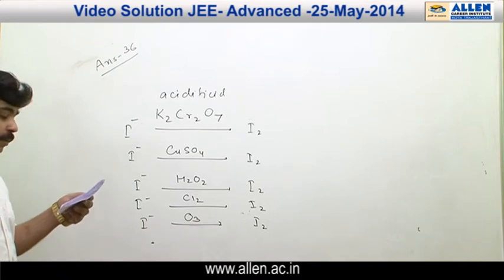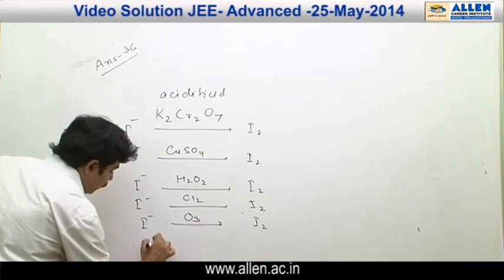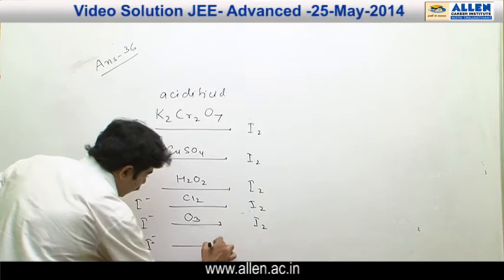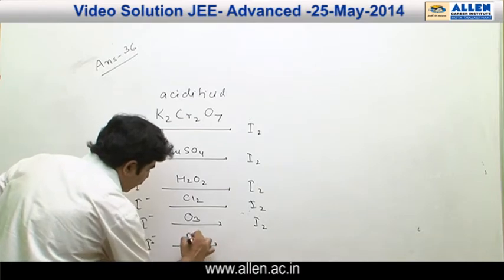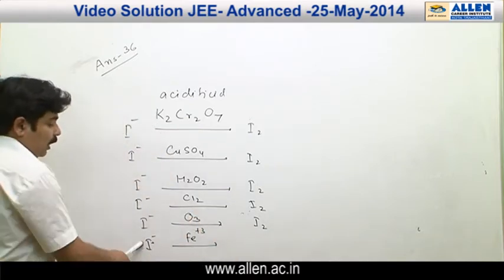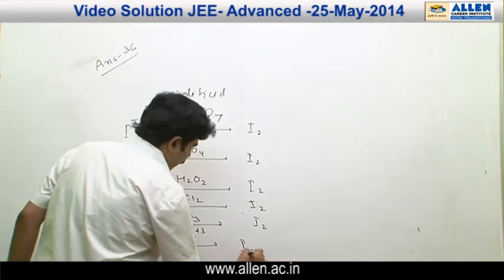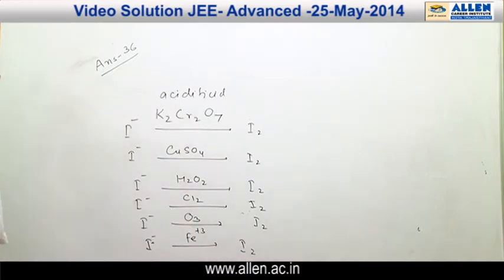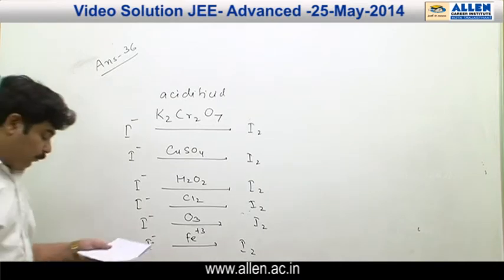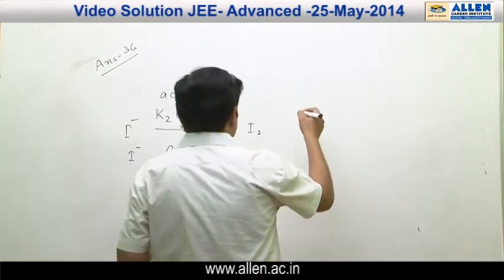When I⁻ reacts with Fe³⁺ (that is, FeCl₃ solution), I⁻ is converted into I₂ and the +3 oxidation state of iron is converted into Fe²⁺. Another reagent is H₂O₂, and another reagent is HNO₃.